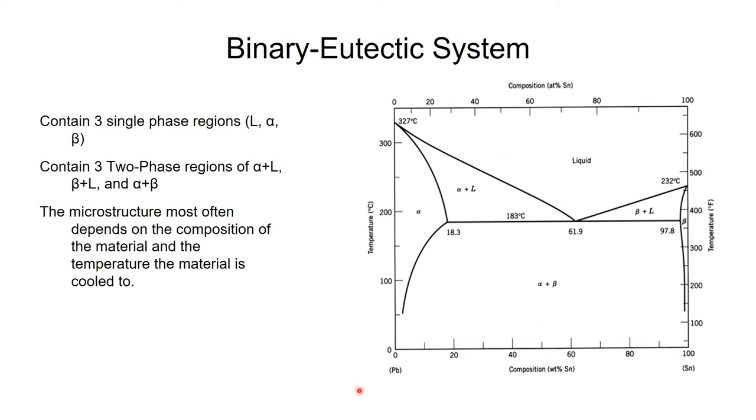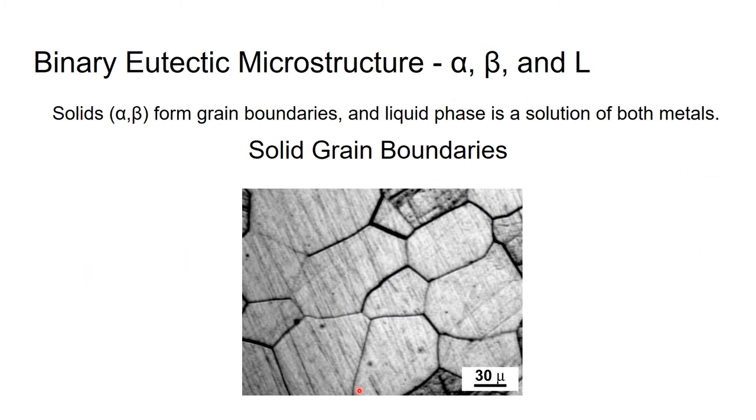The microstructure most often depends on the composition of material and the temperature the material is cooled to. For binary eutectic systems, microstructure has many forms. In the alpha and beta phases, grain boundaries form between each grain of the microstructure. And in the liquid phase, it is just a solution of both the alpha and the beta phases in liquid form.